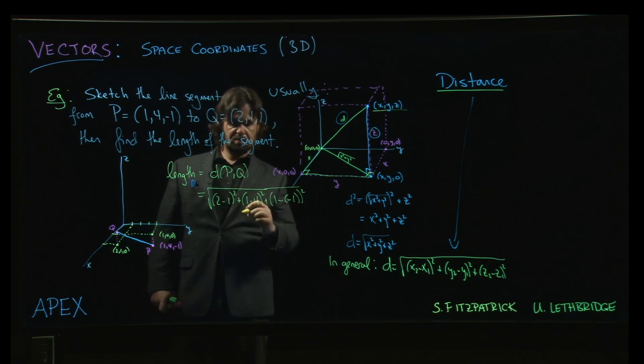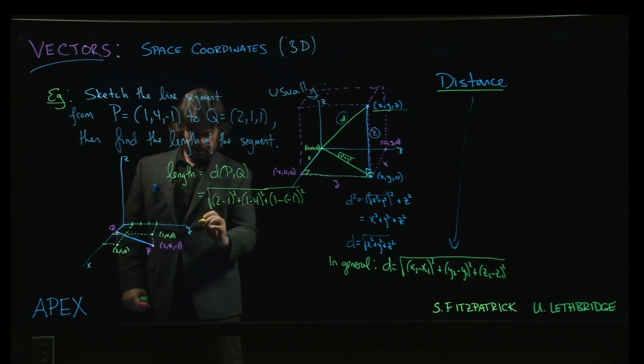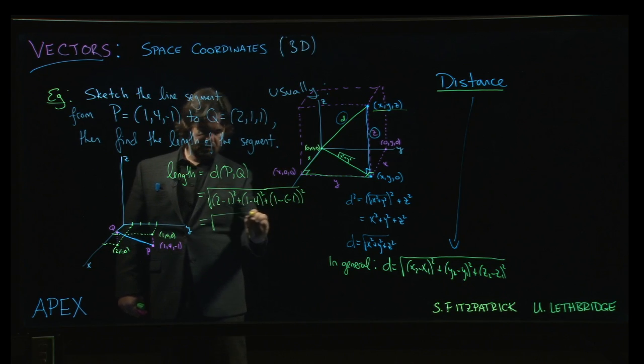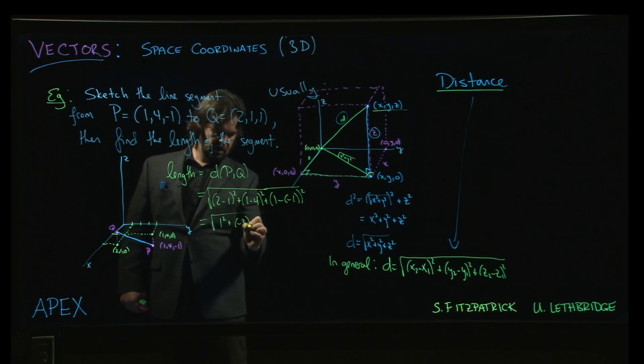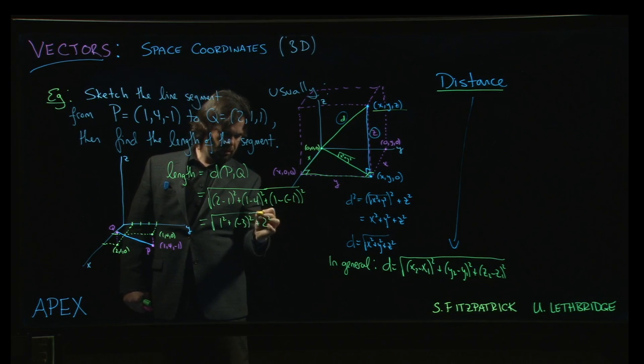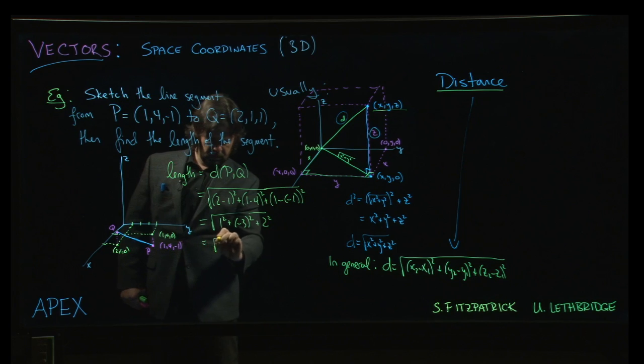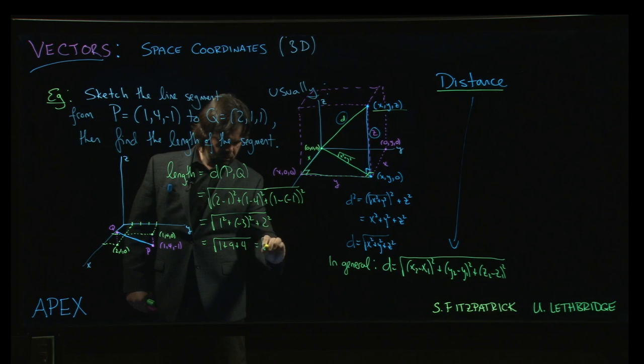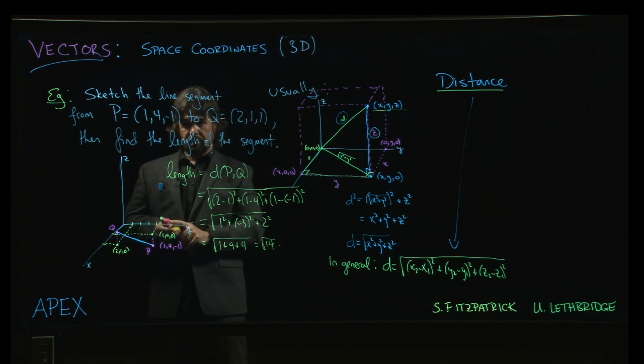Watch out for the double negative. That's probably the biggest pitfall that you're going to run into doing these. There's a sign error because there's a lot of subtraction going on. Okay, so 2 minus 1. 1 squared minus 3 squared. And then that's minus minus becomes plus. So 1 plus 1 is going to give us 2, right? 2 squared. So we get the square root of 1 plus 9 plus 4 or square root of 14 is the length of the segment.